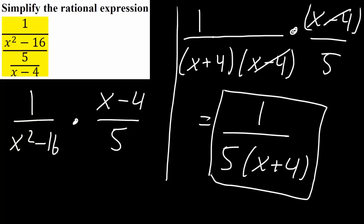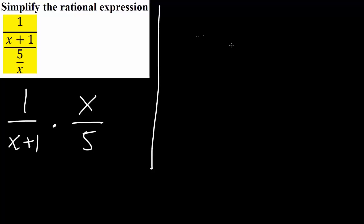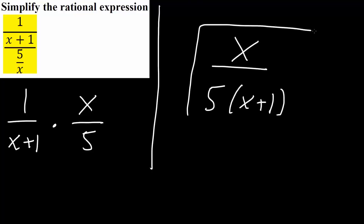Now we have one more problem. The last problem is almost the same as what we previously did. We simply rewrite this as 1 divided by x plus 1, times x divided by 5. We can't factor anything, so our final answer would simply be x divided by 5 times x plus 1, written as x divided by 5(x plus 1). And that's all we need to do for these four problems.